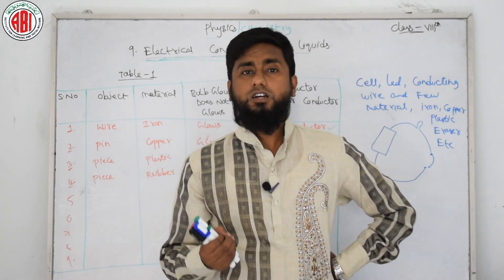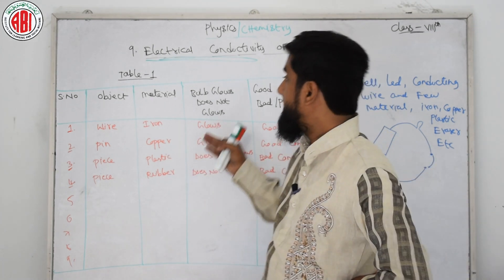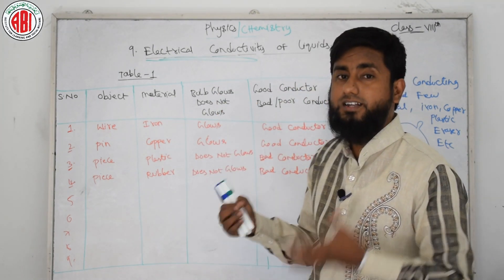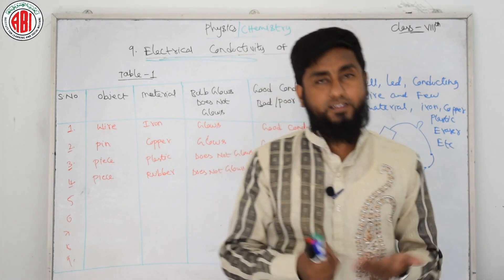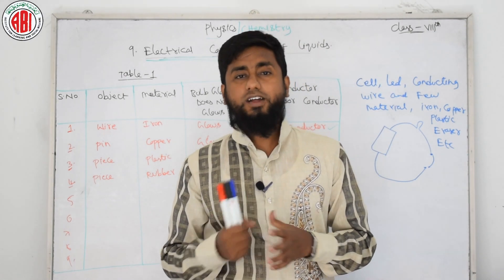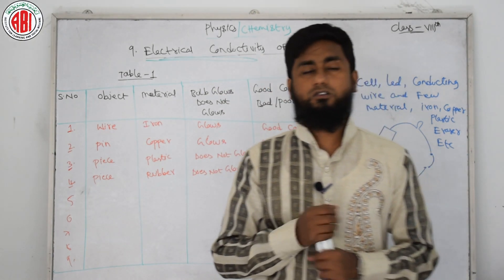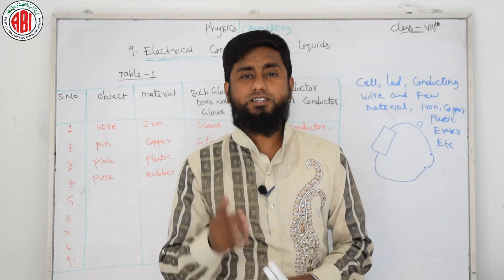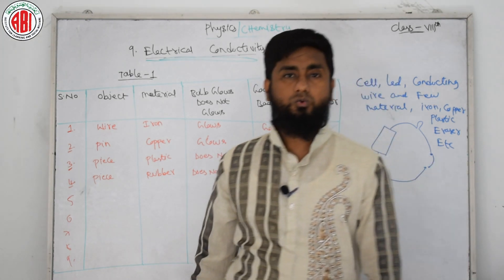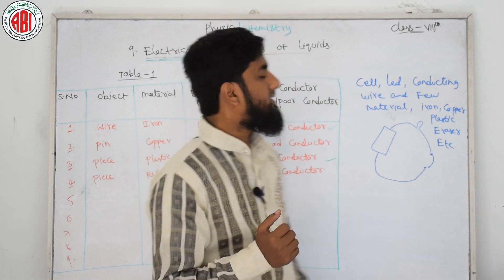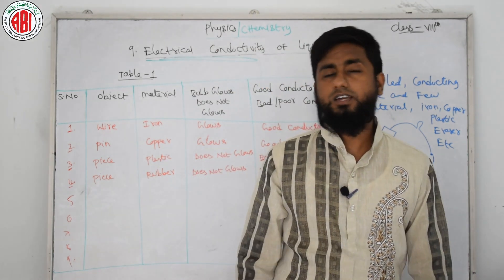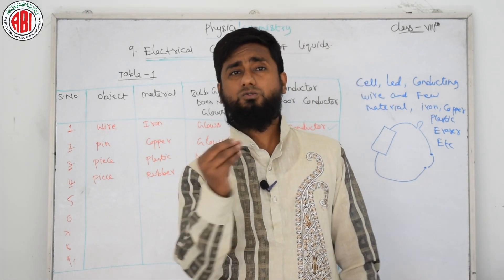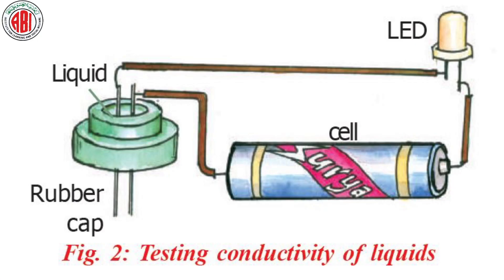Now we will do Activity 2 on electrical conductivity of liquids — to find out whether a given liquid allows electric current to pass through it or not. This is also an experimental setup. We have taken a cell, an LED, and a container with a rubber cap. There are two conducting wire ends dipped into the liquid with a gap of 2 mm or less between them.